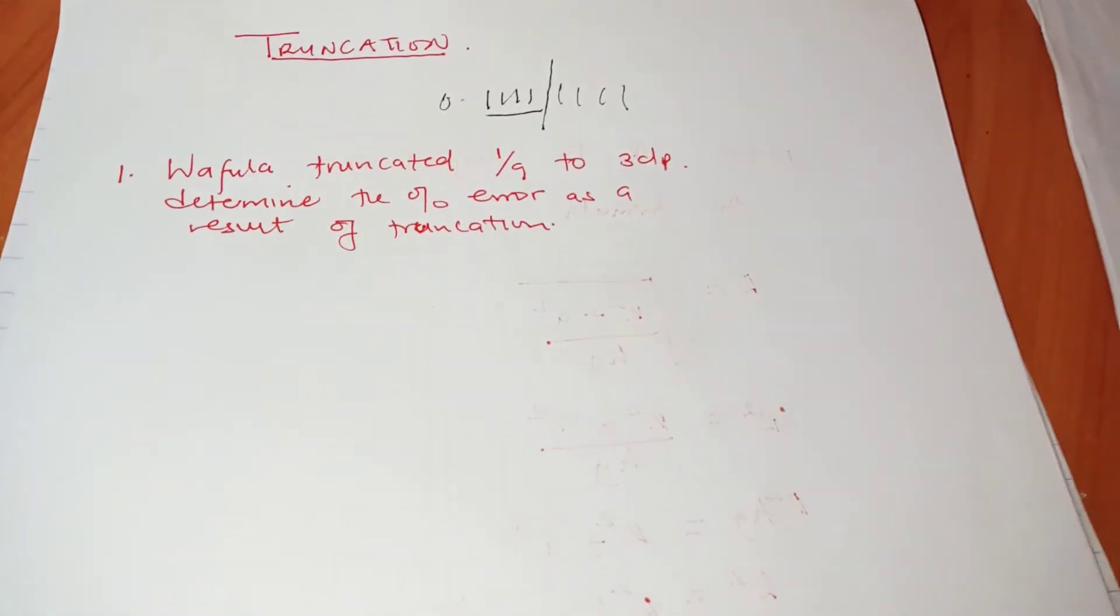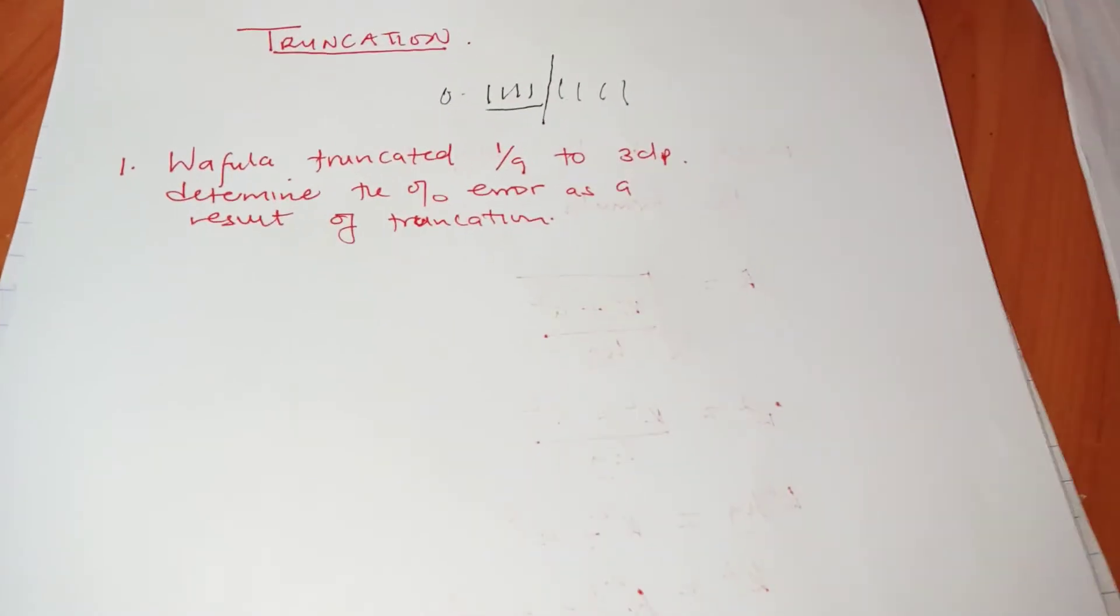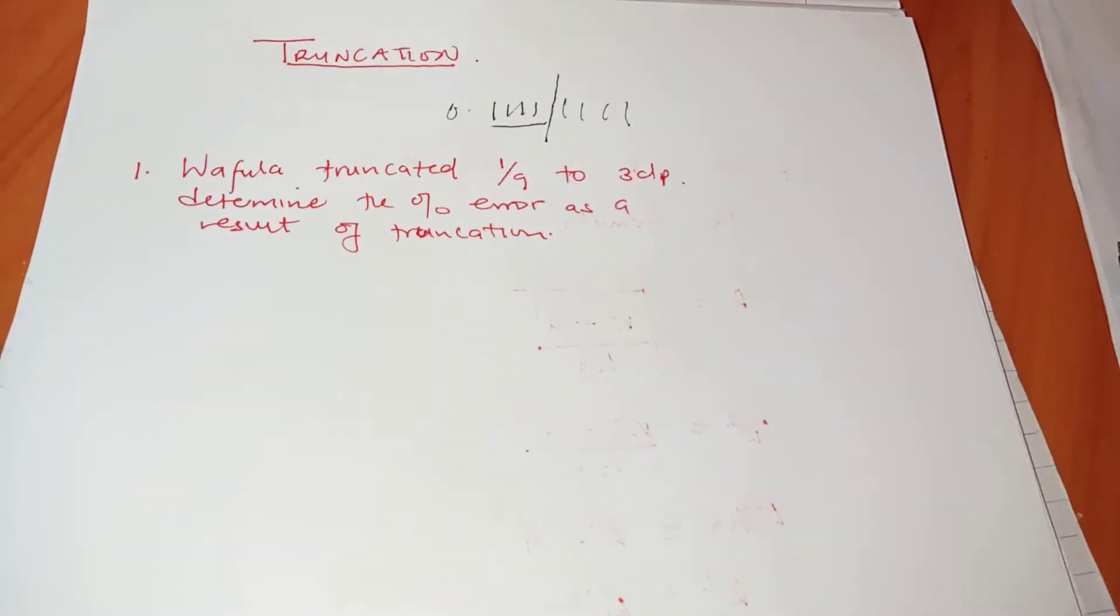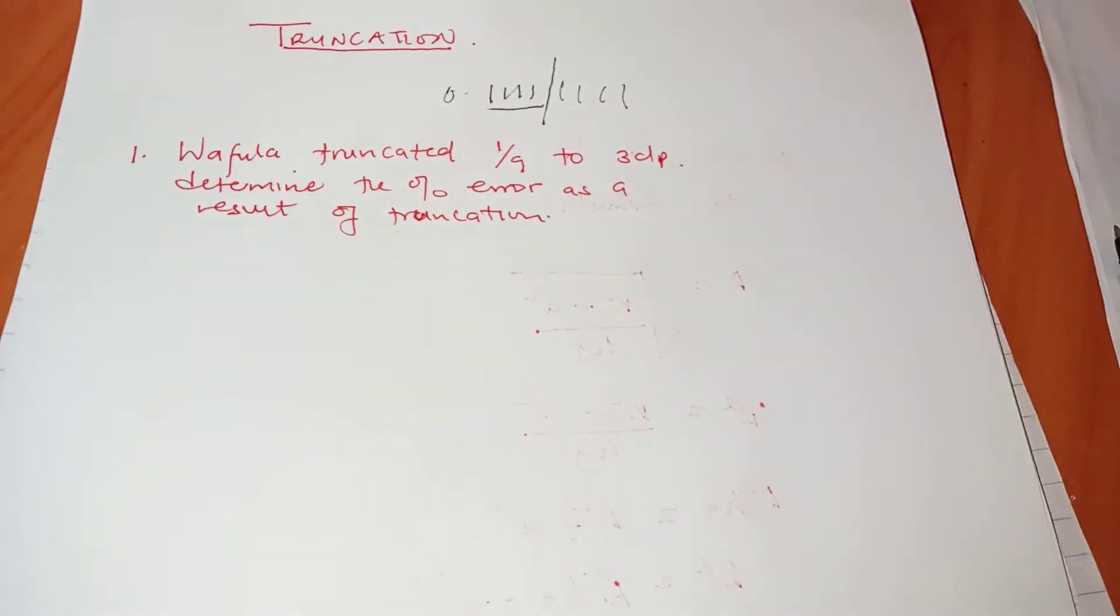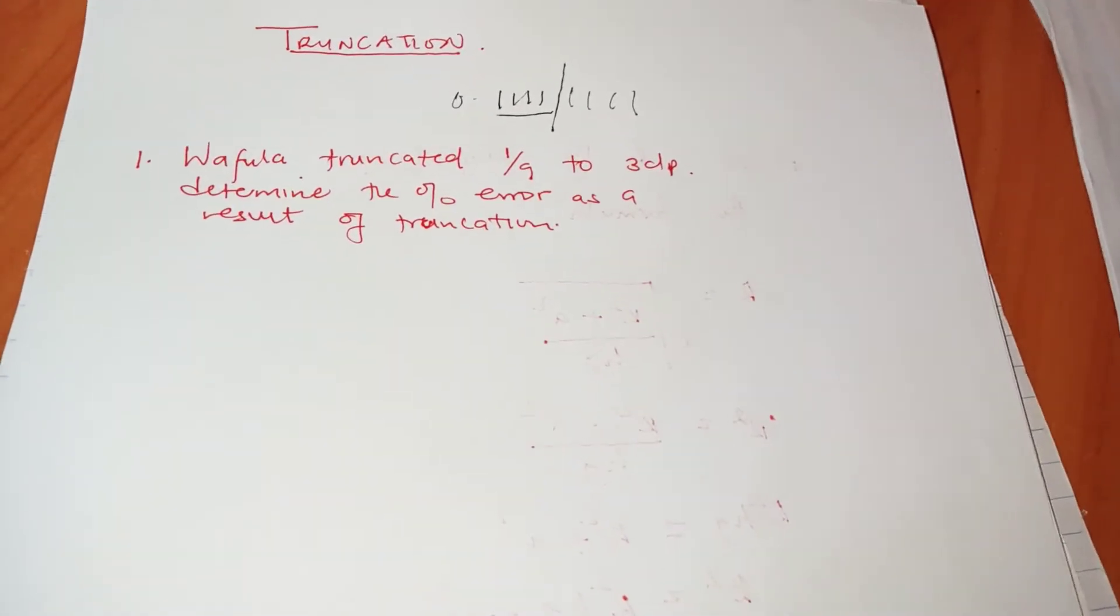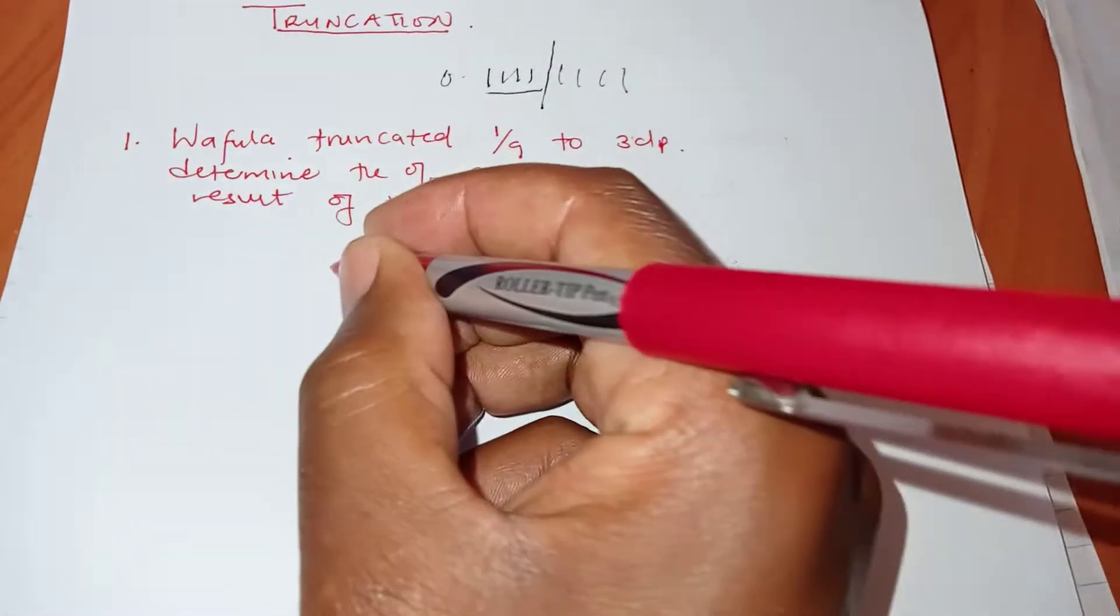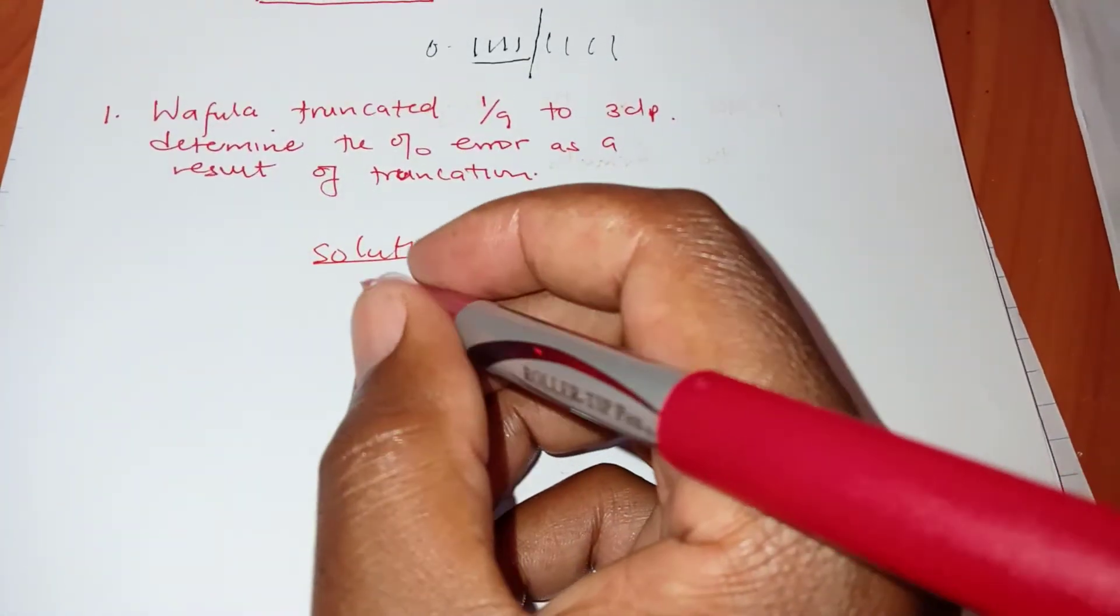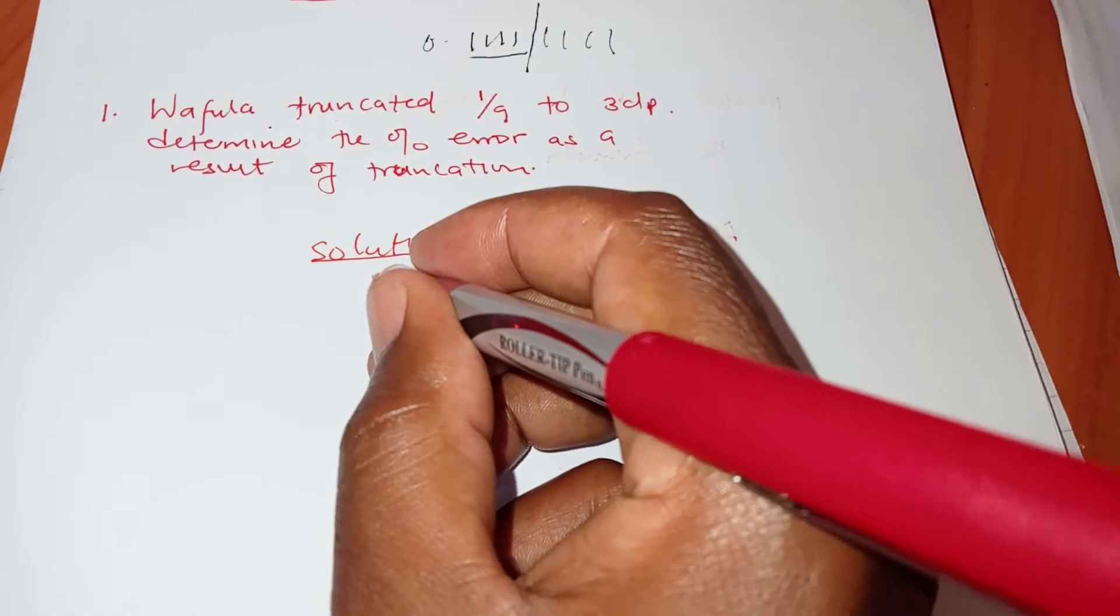So we solve this problem and another one here and we get to understand how truncation is dealt with. We're fully truncated 1 over 9 and the first thing that we're going to do here in our solution is to ask ourselves, what is 1 over 9 in decimal form?